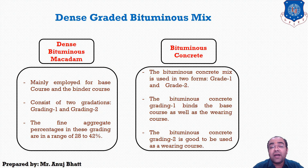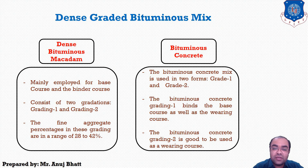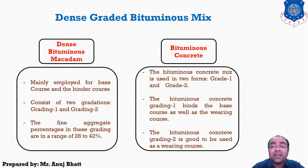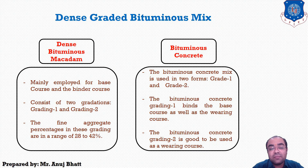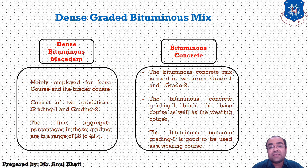Almost all flexible pavements are constructed using dense graded bituminous mix. There are two types: Dense Bituminous Macadam (DBM) and Bituminous Concrete (BC). DBM is mainly employed for base course and binder course, and consists of two grades. Grade 1 has a nominal maximum aggregate size of 37.5 mm while Grade 2 has 25 mm. Fine aggregate percentages in both gradings are in the range of 28 to 42 percent.